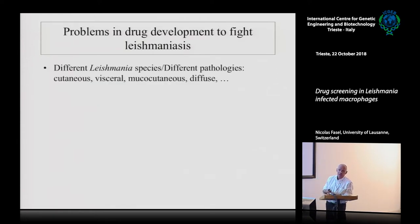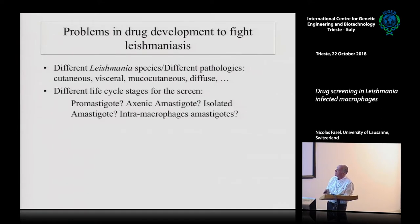First, we have to deal with different Leishmania species and different pathologies — cutaneous, visceral, mucocutaneous, diffuse leishmaniasis — and all of them have small differences which means some drugs can work with one species but not another. You also have different life cycle stages: should you screen against promastigotes, axenic amastigotes, isolated amastigotes, or intramacrophage amastigotes?